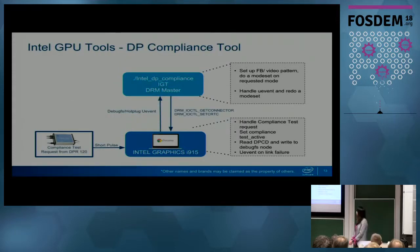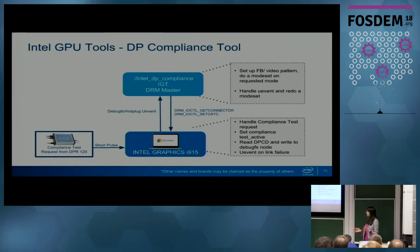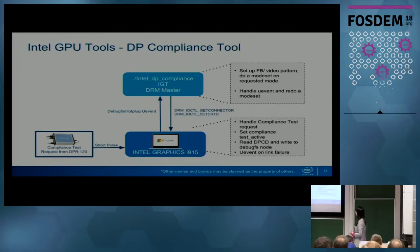I also wrote a tool - it's upstreamed in the Intel GPU tools now. It's a DP compliance tool for fully automating this compliance testing. It requires having DPR120 connected to the device under test, but after that it just gets the test request, handles it from DPR120, and runs the entire suite - keeping a log of what tests passed and failed. That was a good way for us to do our pre-merge and post-merge testing.